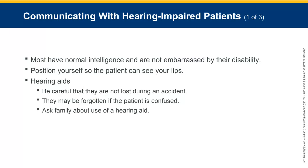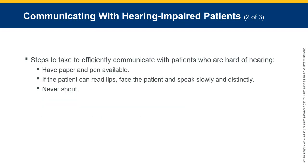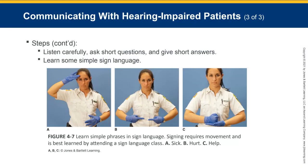Communicating with hearing-impaired patients: most have normal intelligence and are not embarrassed by their disability. Position yourself so the patient can see your lips. Hearing aids might be important — be careful they are not lost during an accident and ask family about their use. Steps to communicate efficiently: have paper and pen available; if the patient can read lips, face them and speak slowly and distinctly; listen carefully; ask short questions and give short answers; consider learning some simple sign language.